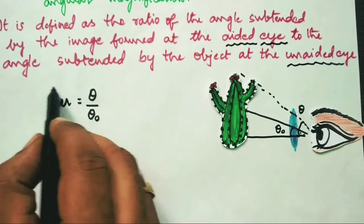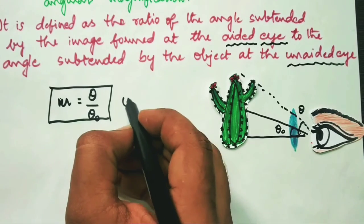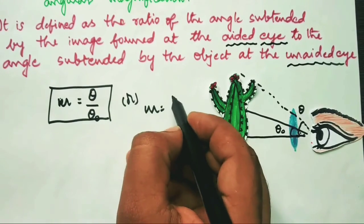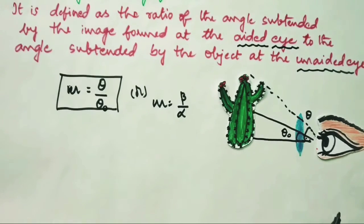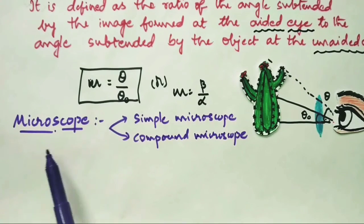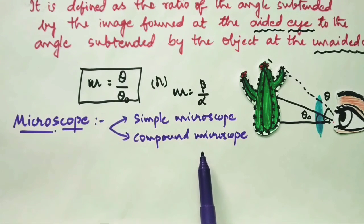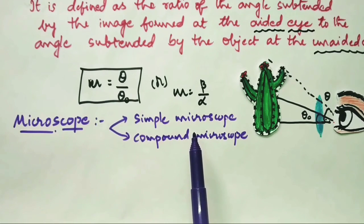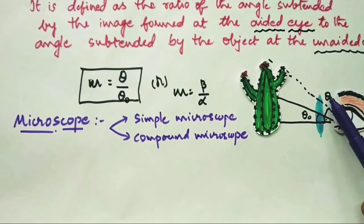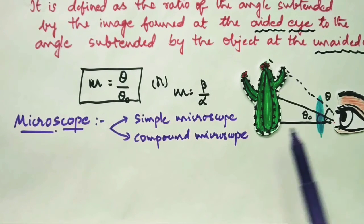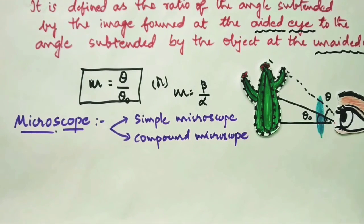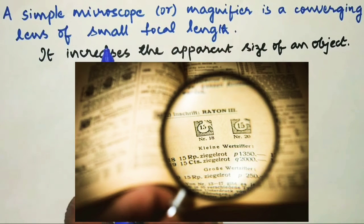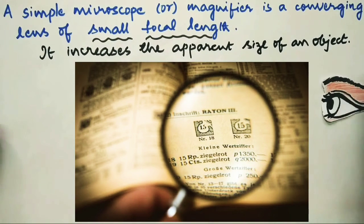Angular magnification may also be represented as beta by alpha, where beta is the angle subtended at the aided eye and alpha at the unaided eye. A simple microscope, or simple magnifier, is a converging lens of small focal length. As the name implies, this device increases the apparent size of an object when viewed through it, and it is also called a magnifying glass, used to see tiny objects.